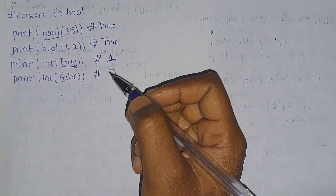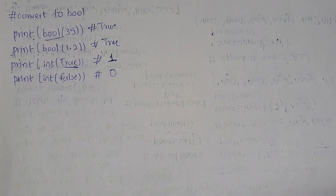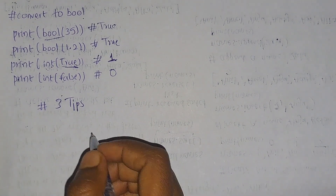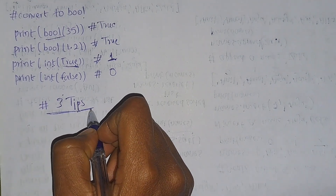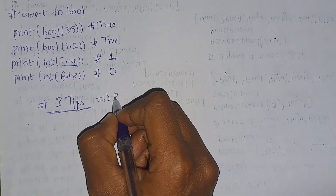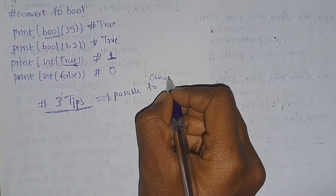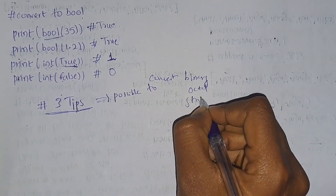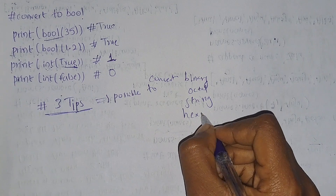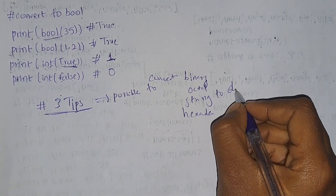In the form of int, True is taken as 1. If you take int(False), False represents 0 by default. This is all about converting from one number type to another. At the beginning I said I would provide three tips regarding numbers — tip one: it is possible to convert a binary, octal, or hexadecimal string to a decimal integer.